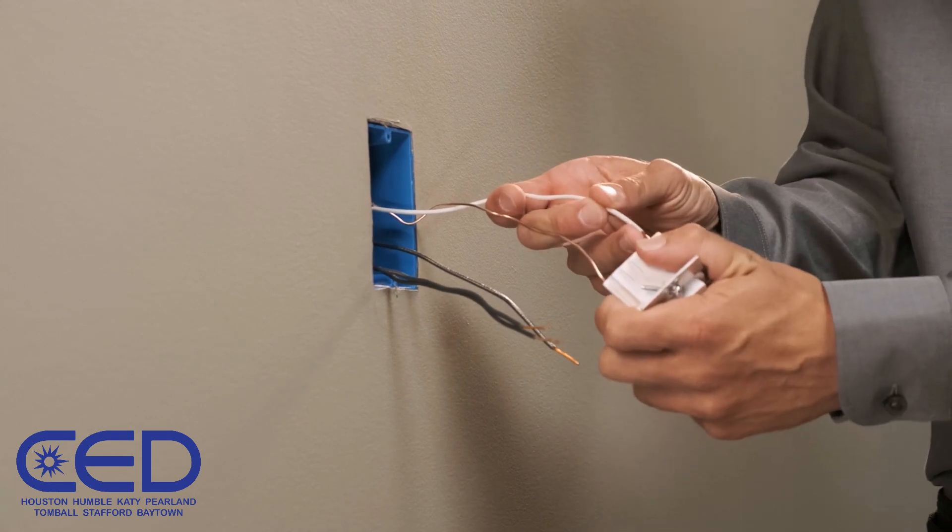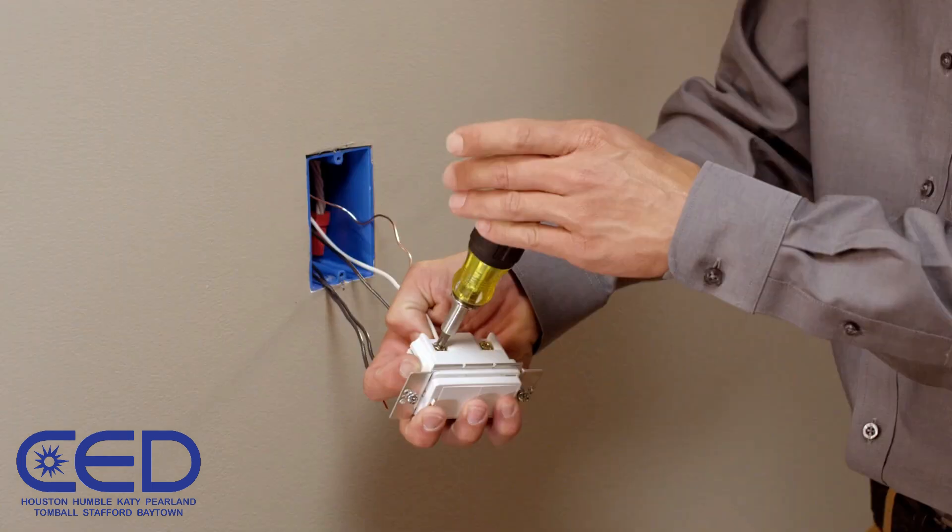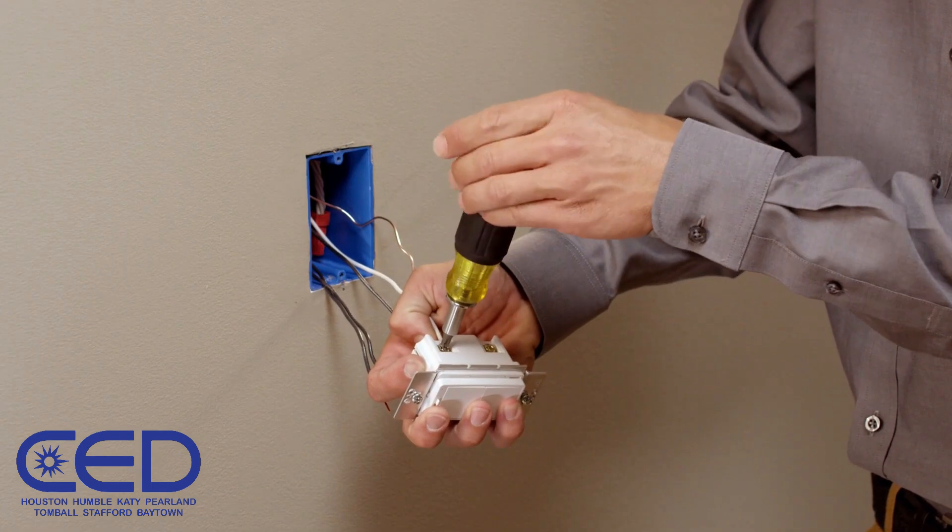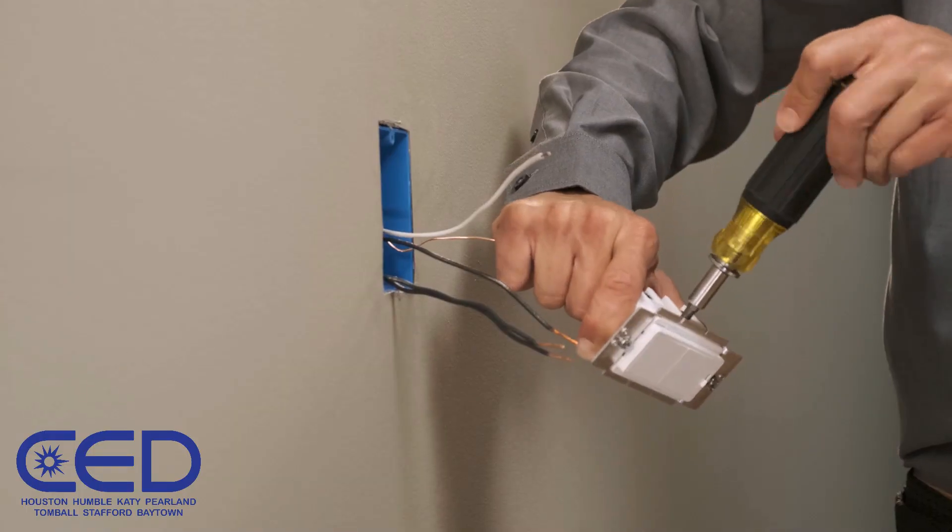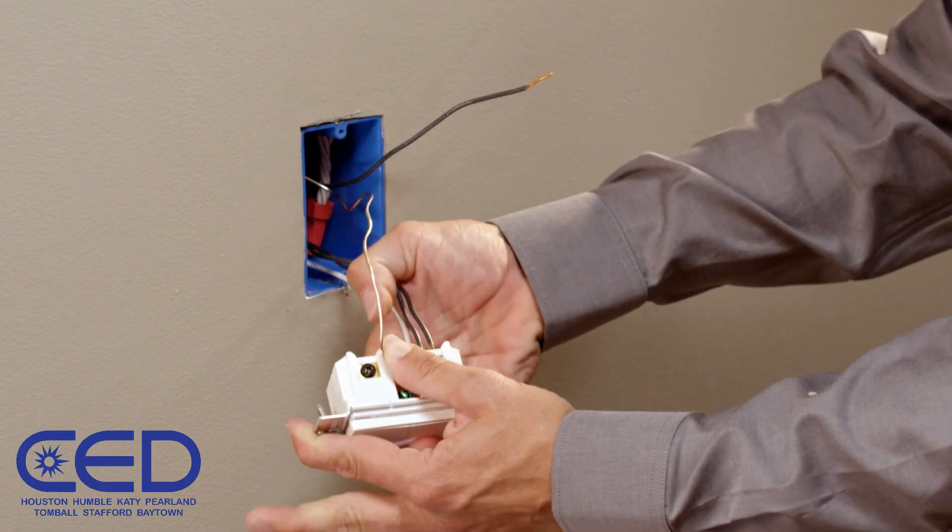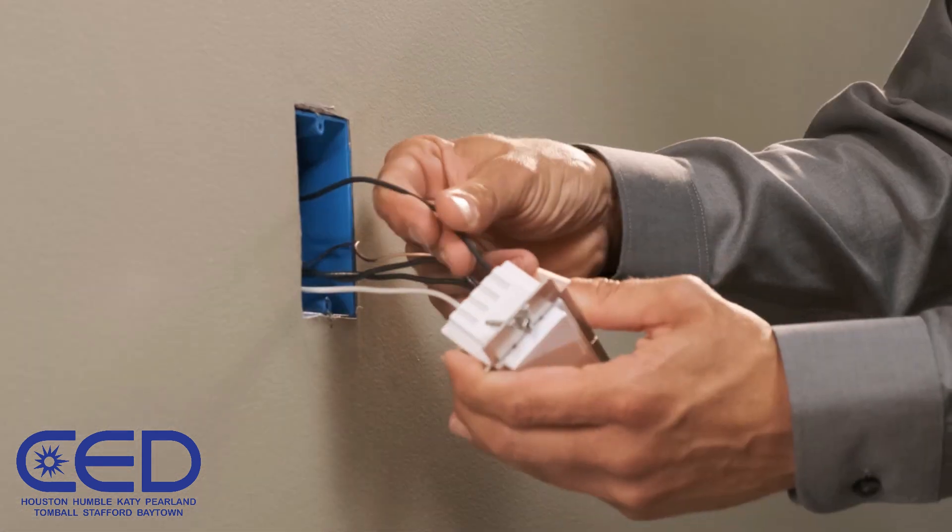On the other end of the jumper, connect to the device. Tighten the terminal screw until the wire is firmly held. Install the green wire followed by the black hot wire then the black load wire.